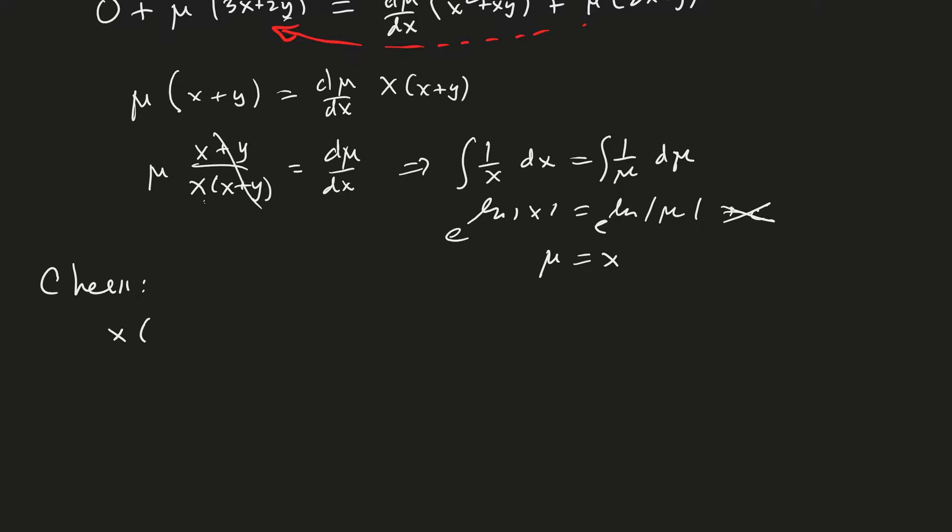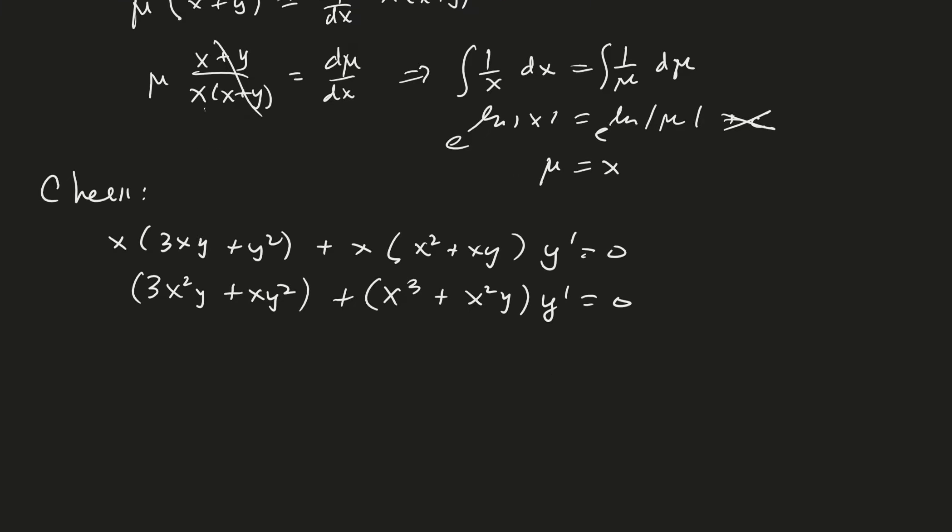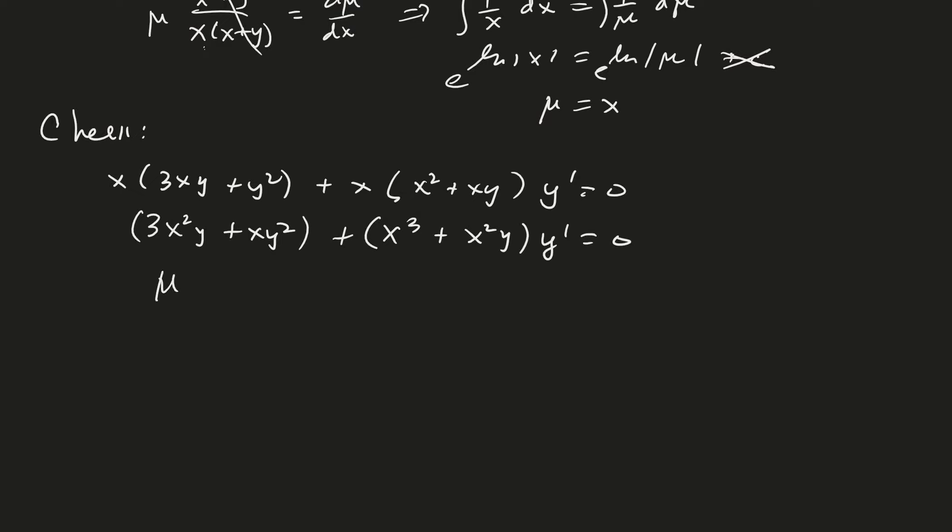that is x times 3xy plus y squared plus x times x squared plus xy y prime equals zero is 3x squared y plus xy squared plus x cubed plus x squared y y prime. Good. And now, M sub y is equal to 3x squared plus 2xy. And then N sub x is equal to 3x squared plus 2xy. Yay!